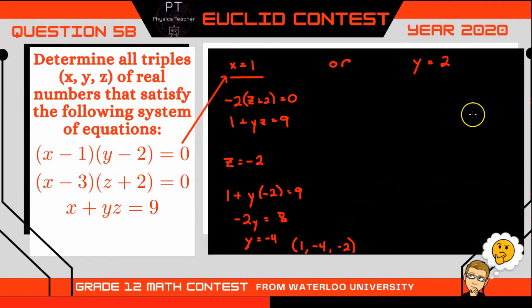All right, well let's look at the path where y is equal to 2. Well in that case, looking at our second equation, there's no y in the second equation, so we have two possible solutions here: x can be equal to 3 or z can be equal to negative 2.